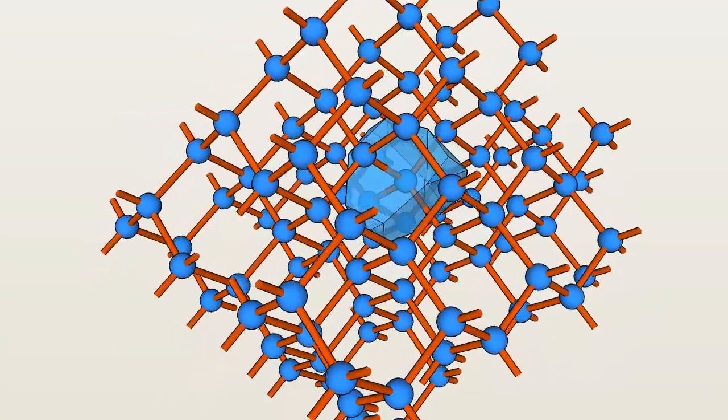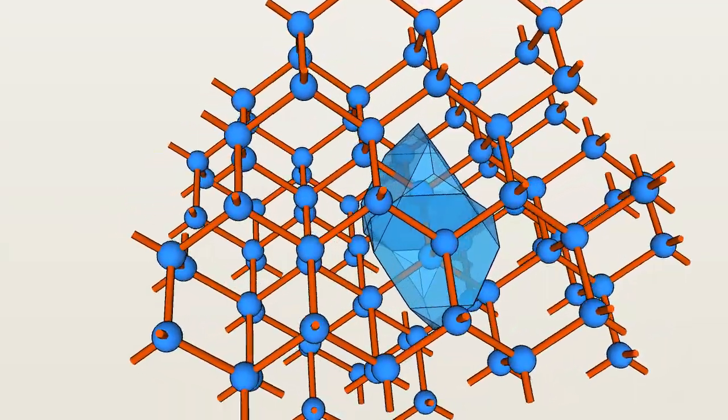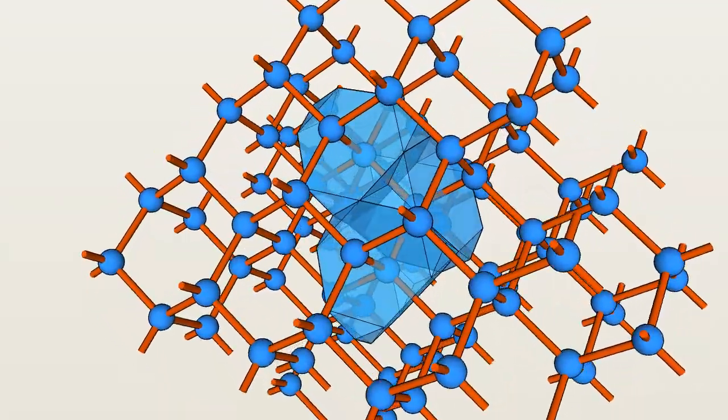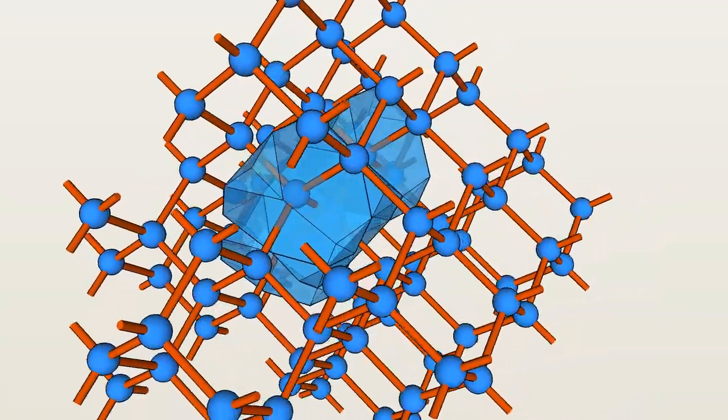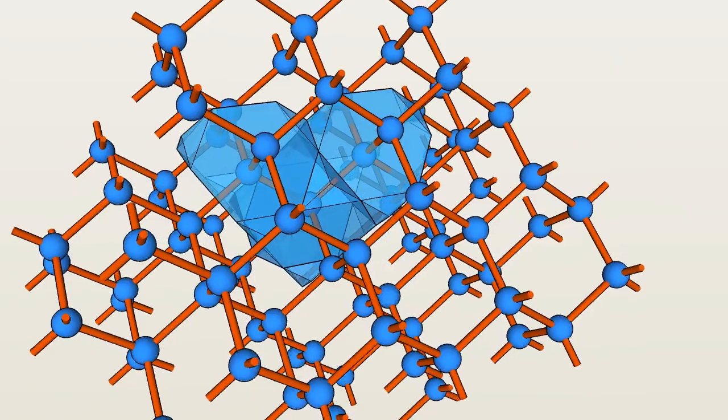Every carbon atom in diamond has the same shape around it, so these little tetrahedra have the rare property that we can completely fill space by using them as building blocks. Let's take away the framework so you can see the shapes more clearly.